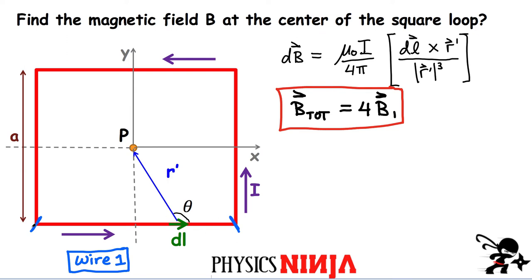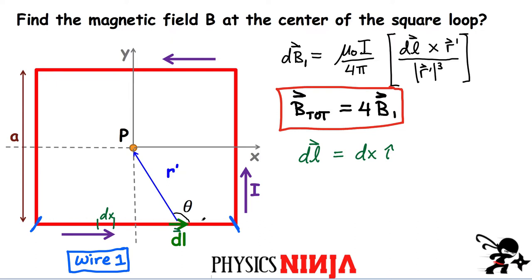I'm going to focus on wire one and find the field produced by this total wire. Let's apply the Biot-Savart to find that. Now, don't worry about the constant terms — those are simple. All we have to do is define both vectors and then integrate this expression. The vector DL goes in the direction of the current. Each segment of wire here is going along the X direction, so the magnitude of DL is going to be a tiny length DX, and the direction is simply along the X direction — the î hat direction — going in the positive direction because the current flows from left to right.